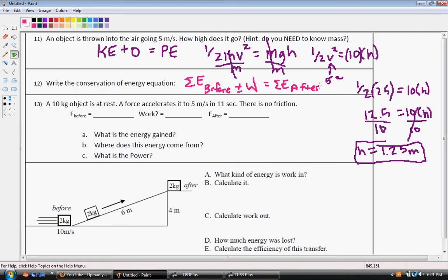And do you see how we did that in the previous problem? We had the energy before, which was kinetic, because it was moving, and then we didn't have any work, so it's plus zero, equals the potential energy at how high does it go at maximum height.